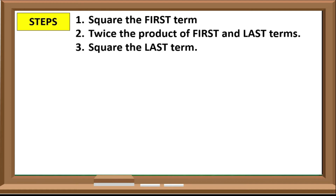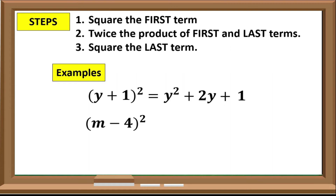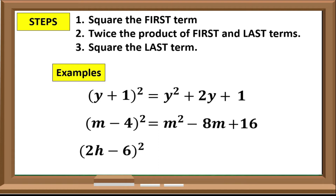Now let us try more examples. What is the square of the quantity (y + 1)? That would be y squared plus 2y plus 1. What about the square of the quantity (m − 4)? The answer is m squared minus 8m plus 16. And how about the square of the quantity (2h − 6)? The answer would be 4h squared minus 24h plus 36.